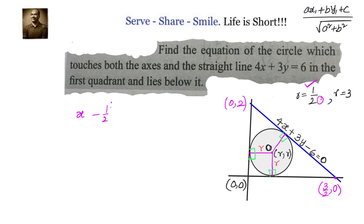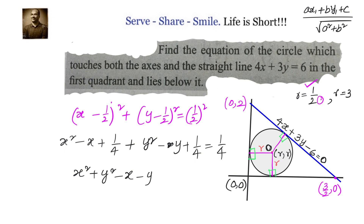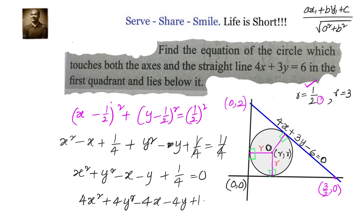So our equation will be x minus 1 by 2 whole squared plus y minus 1 by 2 whole squared equals to 1 by 2 whole squared. Expanding, we have x squared minus x plus 1 by 4 plus y squared minus y plus 1 by 4 equals to 1 by 4. Simplifying and multiplying through by 4 to clear the fractions, we get 4x squared plus 4y squared minus 4x minus 4y plus 1 equals to 0.